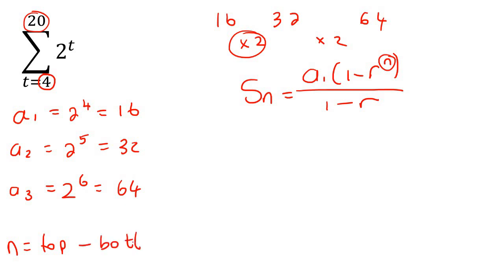And so, that's going to be 20, take away 4, add 1, which is 17. So, there are 17 terms in the sequence.